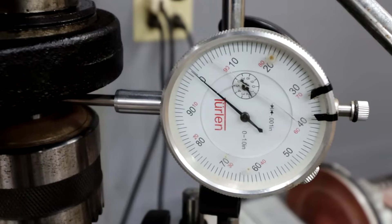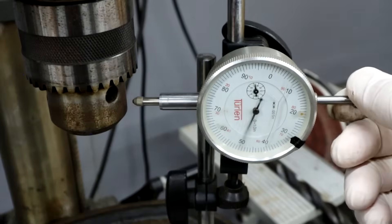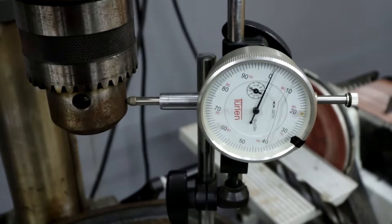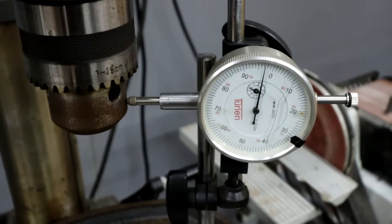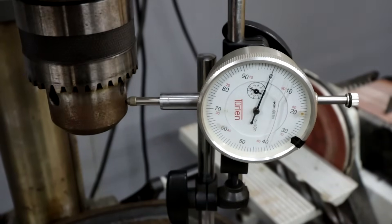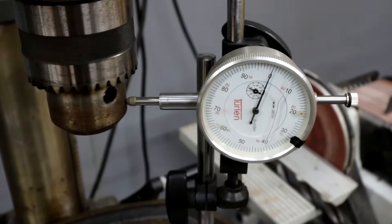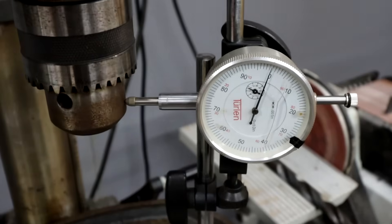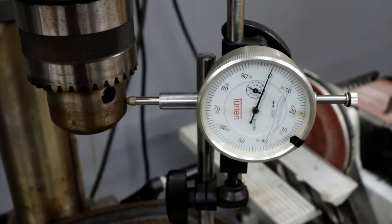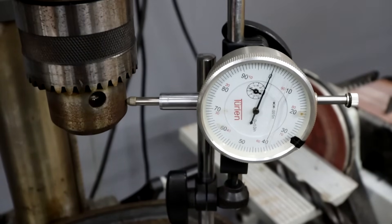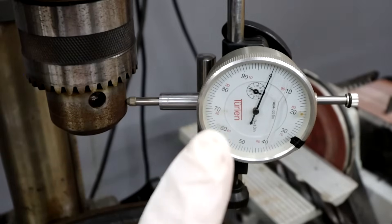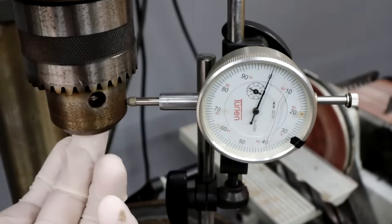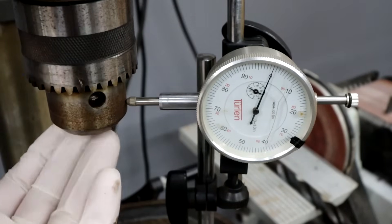So now we're going to move down to the chuck itself. I have about three thousandths. Now what that only shows us though, is what the outside is like. Doesn't tell us how the inside is machined or how the jaws are made. So we will now chuck up a drill bit and then we'll put the dial indicator on the drill bit.